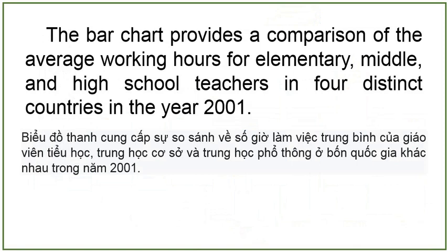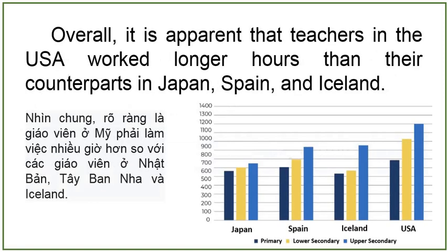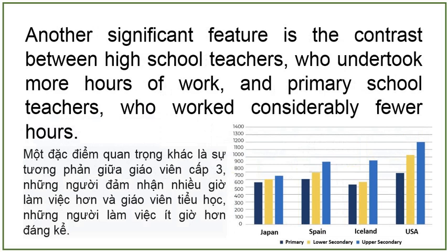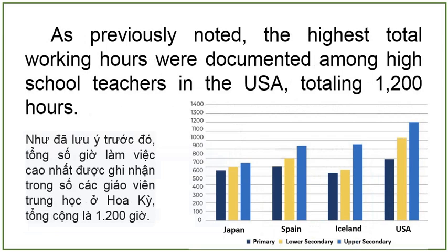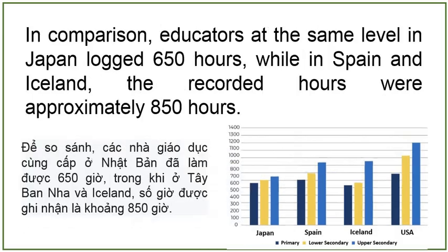The bar chart provides a comparison of the average working hours for elementary, middle, and high school teachers in four distinct countries in the year 2001. Overall, it is apparent that teachers in the USA worked longer hours than their counterparts in Japan, Spain, and Iceland. Another significant feature is the contrast between high school teachers who undertook more hours of work and primary school teachers who worked considerably fewer hours. The highest total working hours were documented among high school teachers in the USA, totaling 1,200 hours. In comparison, educators at the same level in Japan logged 650 hours, while in Spain and Iceland the recorded hours were approximately 850 hours.